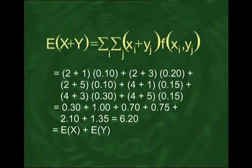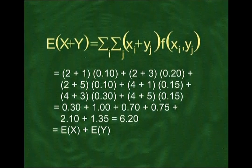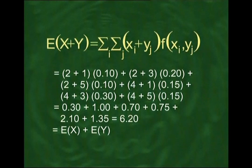Next, we multiply each sum by the probability in that cell to get (xᵢ + yⱼ)·f(xᵢ, yⱼ) for each cell, then sum all these products. We obtain 0.30 + 1.00 + 0.70 + 0.75 + 2.10 + 1.35, and the total comes out to be 6.20 — exactly the same as E(X) + E(Y), confirming the first property.